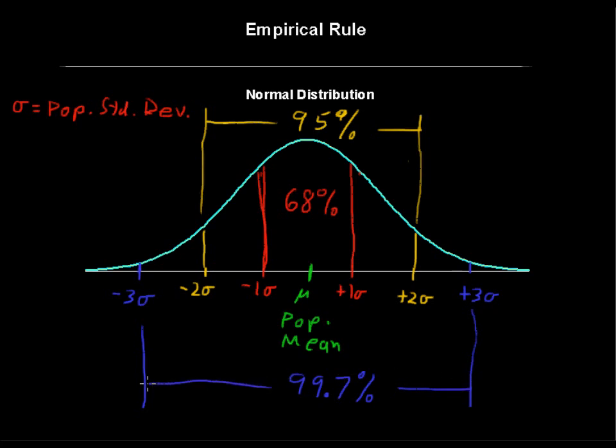So what this means is that the standard deviation is a powerful number. It tells us just within three standard deviations of the mean, you have almost all of the data. Now certainly there are some data points outside of three standard deviations.